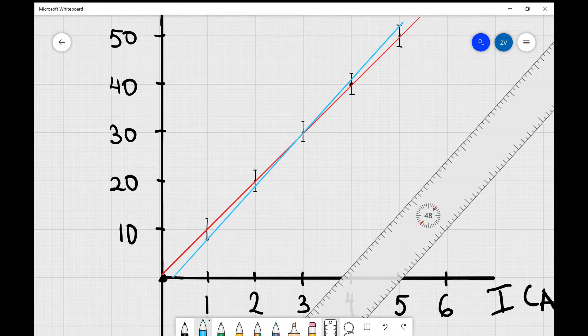So, in this case, the blue line is the line of worst acceptable fit, and the red line is the line of best fit.